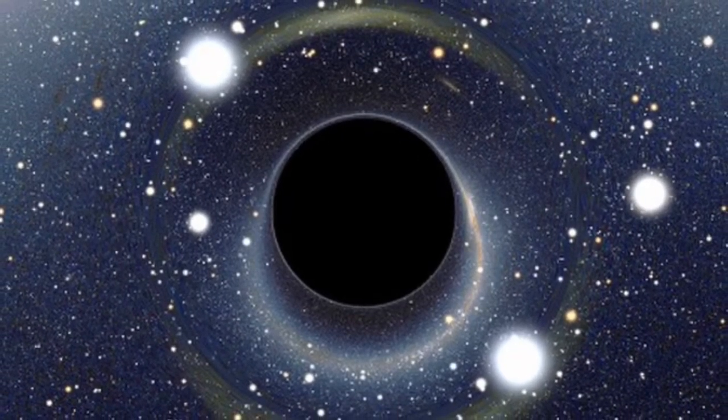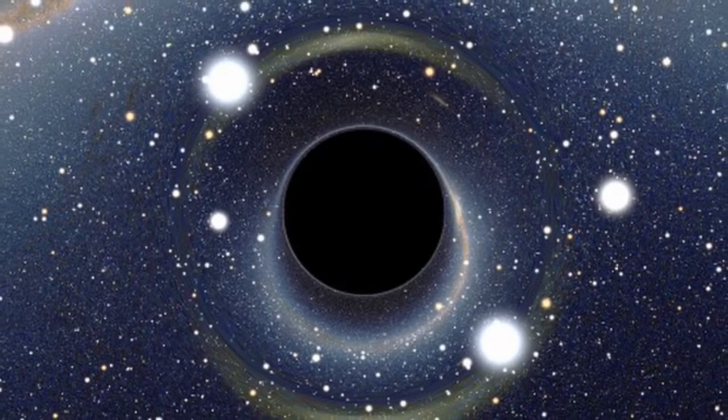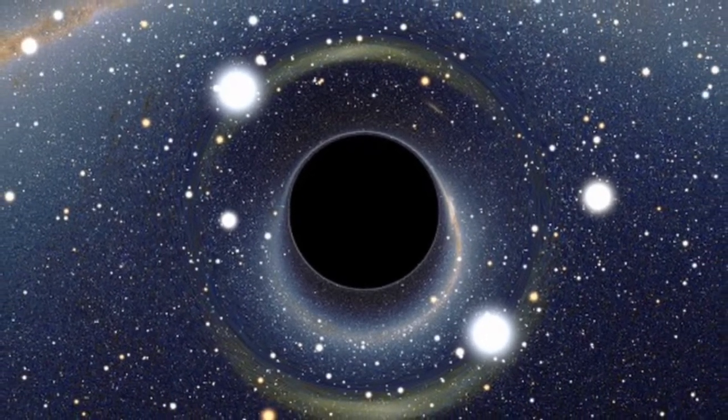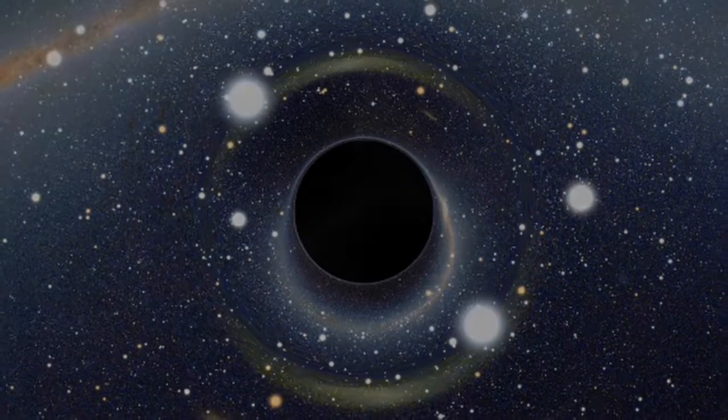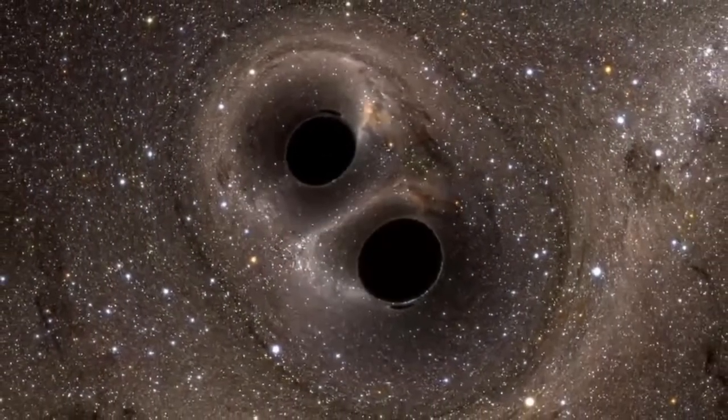Black holes. To understand how a black hole might be formed, you must have an understanding of the life cycle of a star. A star is formed when a large amount of gas starts to collapse on itself due to its gravitational attraction.